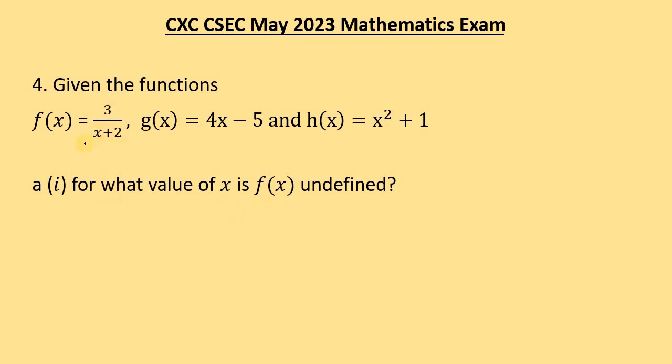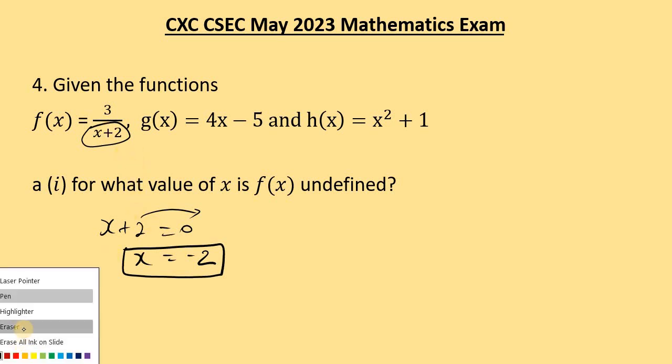We simply take the denominator x + 2, equate it to 0, and find x. So we subtract 2 on both sides. And so that will give us x equal negative 2. And that's it. x being equal to negative 2 will make this function undefined. This answer is done here.